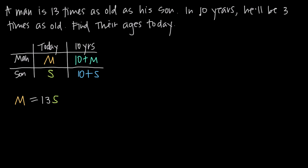We also have a relationship between their ages in 10 years. In 10 years the man will be three times as old as his son. So we take the man's age in 10 years, 10 plus m, and set it equal to three times the son's age in 10 years, giving us: 10 + m = 3(10 + s). We have to multiply the son's age by three to equal the man's age.